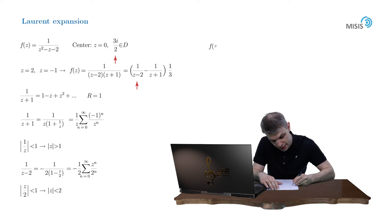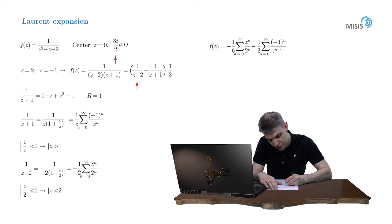f of z equals minus 1/6, the sum from 0 to plus infinity, z to the power of n divided by 2 to the power of n, and minus 1/3, the sum from 0 to plus infinity, negative 1 to the power of n divided by z to the power of n plus 1.